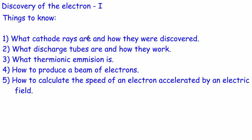We're going to look at what cathode rays are and how they're discovered. They were discovered via discharge tubes, so we're going to look at those two things together first. We're then going to look at what thermionic emission is and how you could actually produce a beam of electrons. So we'll look at those two things together, and then this one links to any of these but most commonly to thermionic emission.